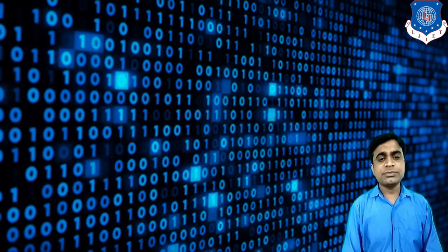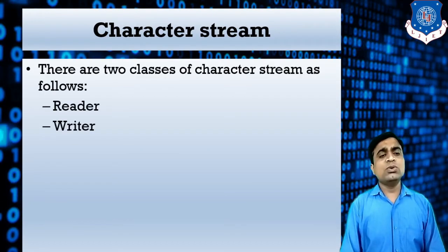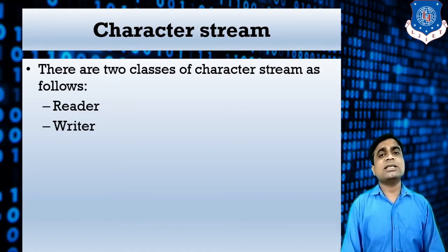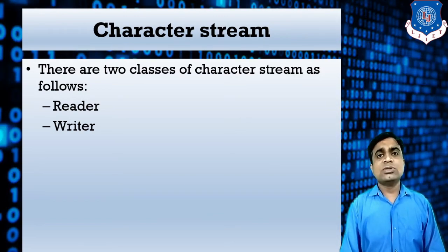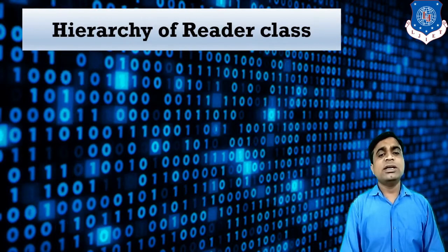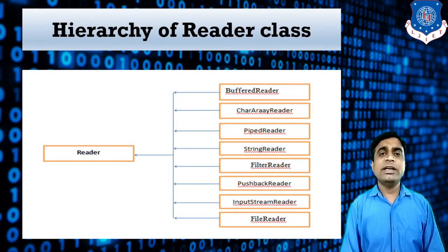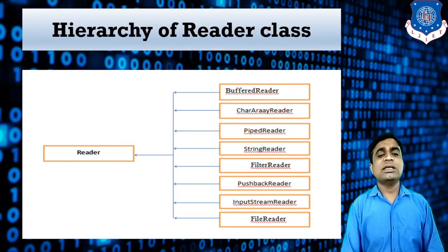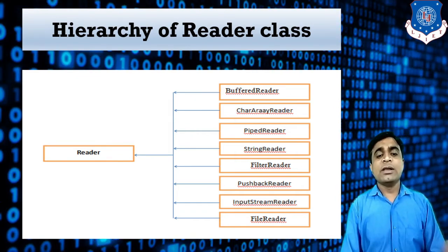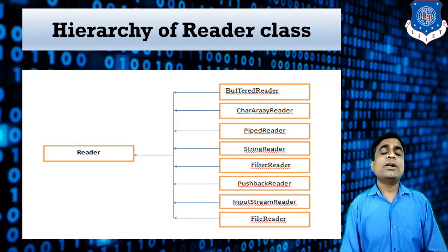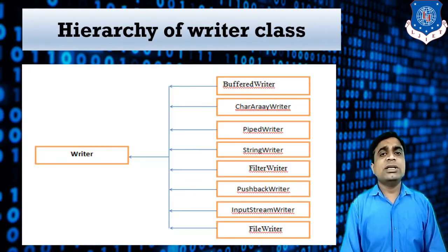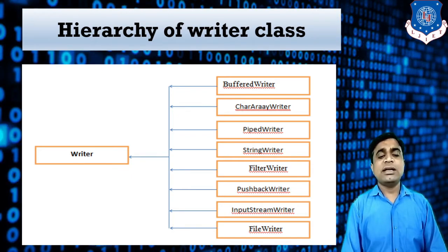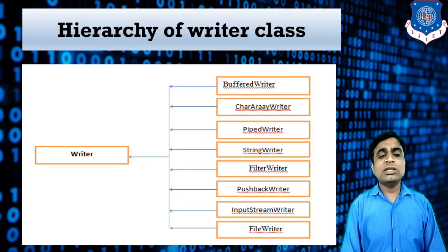For character stream, there are two main classes: Reader and Writer — again, both abstract classes. If you want to use character stream, you need to use a subclass of either of these. The subclasses of Reader include BufferedReader, CharReader, FilterReader, and FileReader. Similarly, the hierarchy of Writer class shows it is abstract, with subclasses including BufferedWriter and FileWriter.